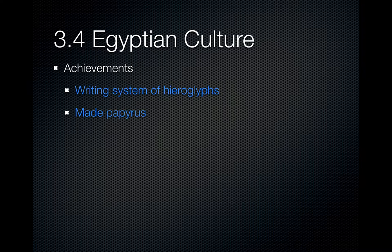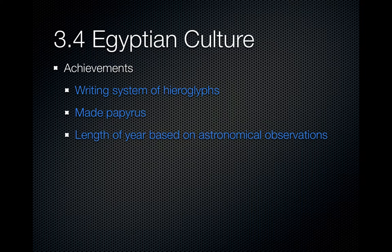Another achievement was making paper out of papyrus — they skinned down this reed and made a rough but functional paper. Also, the length of the year was based on astronomical observations; the Egyptians studied the stars and were able to establish a calendar very similar to the one we use today.